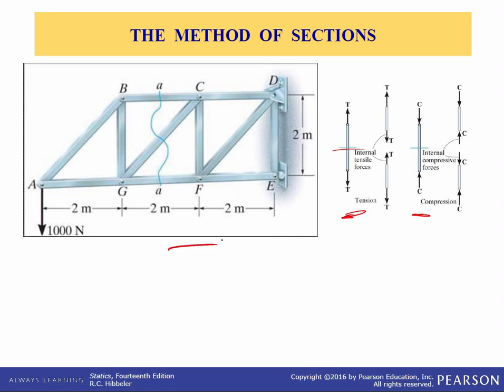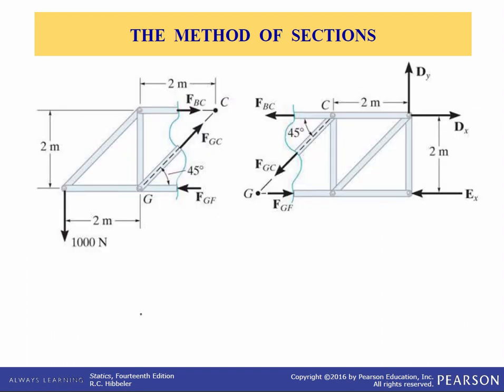For example, consider this truss shown here. If the forces in members BC, CG, and CF are to be determined, then we would section at AA. The free body diagrams of the two sections are shown here. Note that the line of action of each member force is specified from the geometry of the truss, since the force in a member is always along its axis. Also, the member forces acting on one part of the truss are equal but opposite to those acting on the other part, and that's very important.